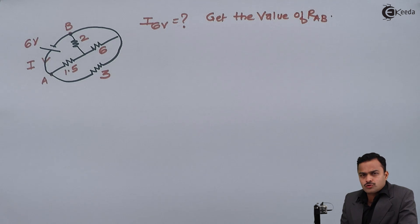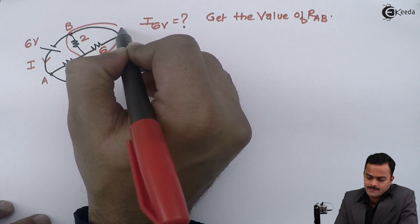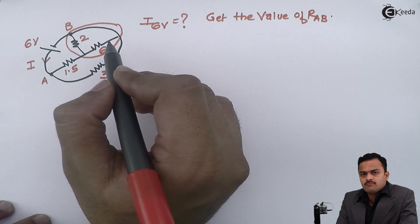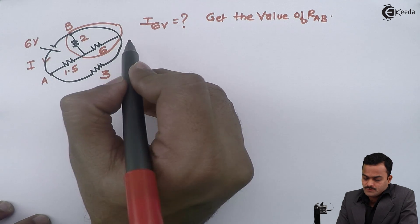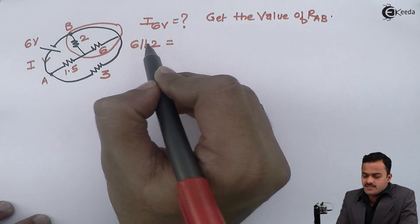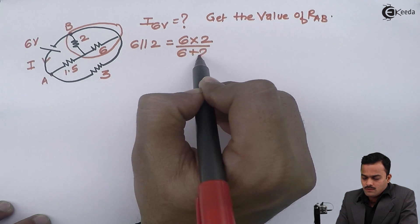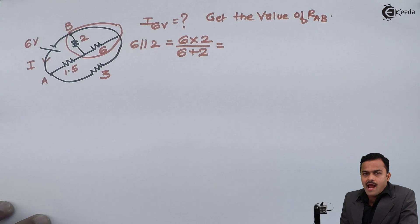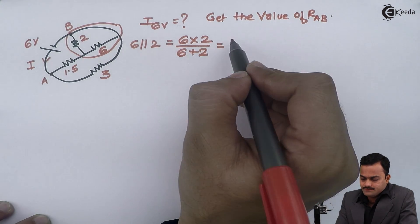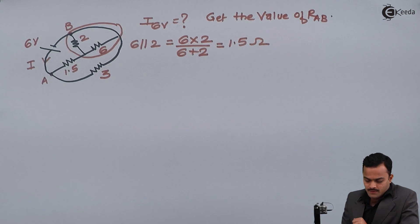We discussed that whenever two resistors are forming a loop, those two resistors are always in parallel. If you see carefully, this 2 ohm and this 6 ohm are forming a loop, so 6 ohm is parallel with 2 ohm. The equivalent is given as multiplication divided by addition, and the value you get is 1.5 ohm.